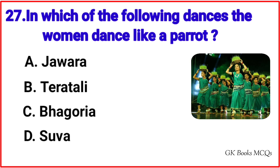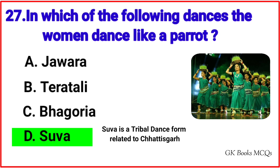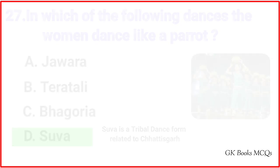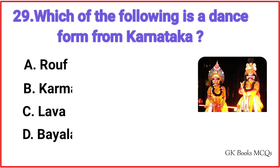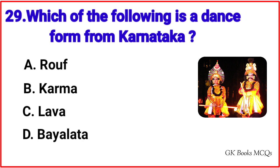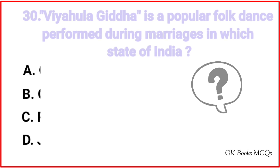Question number 27: In which of the following dances do the women dance like a parrot? Correct answer is option D, Suva. Suva is a tribal dance form related to Chhattisgarh. Question number 28: Which among the following is a dance form from the state of Arunachal Pradesh? Correct answer is option A, Popiv. Question number 29: Which of the following is a dance form from Karnataka? Correct answer is option D, Bayalata.